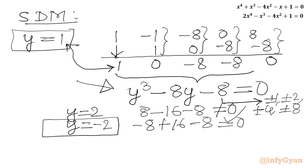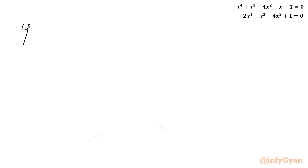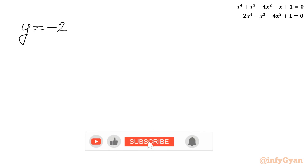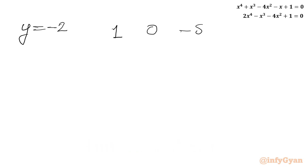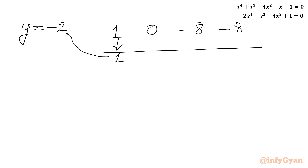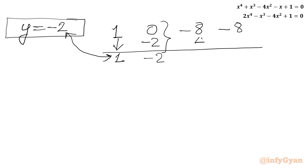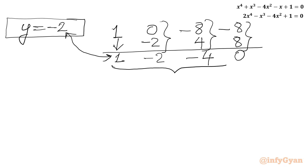Applying synthetic division with base solution y = -2 and cubic coefficients 1, 0, -8, -8: leading coefficient 1 carries down. (-2)(1) = -2, sum = -2; (-2)(-2) = 4, sum = -4; (-2)(-4) = 8, sum = 0. The resulting quadratic equation is y² - 2y - 4 = 0.